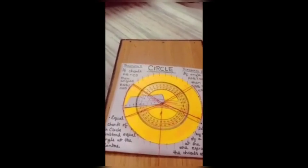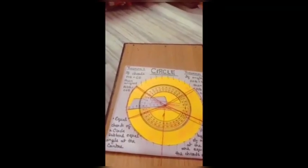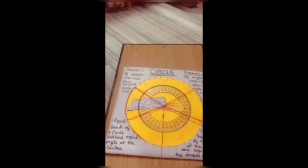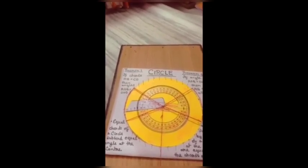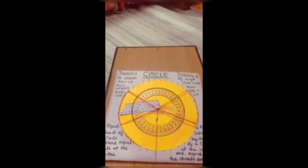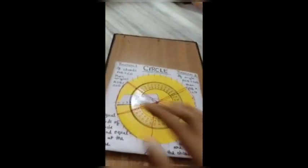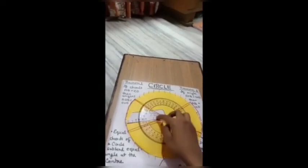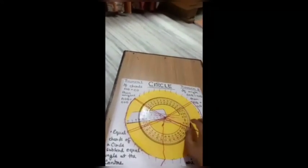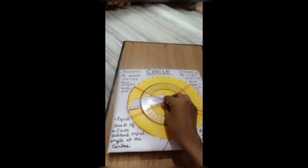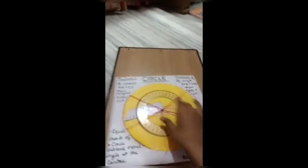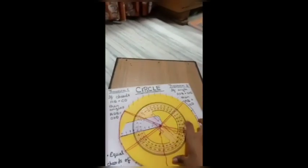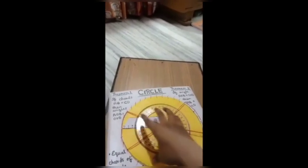In theorem 1, it has been told that equal chords of a circle subtend equal angles at the center, and here I have shown that equal chords of a circle subtend equal angles at the center.